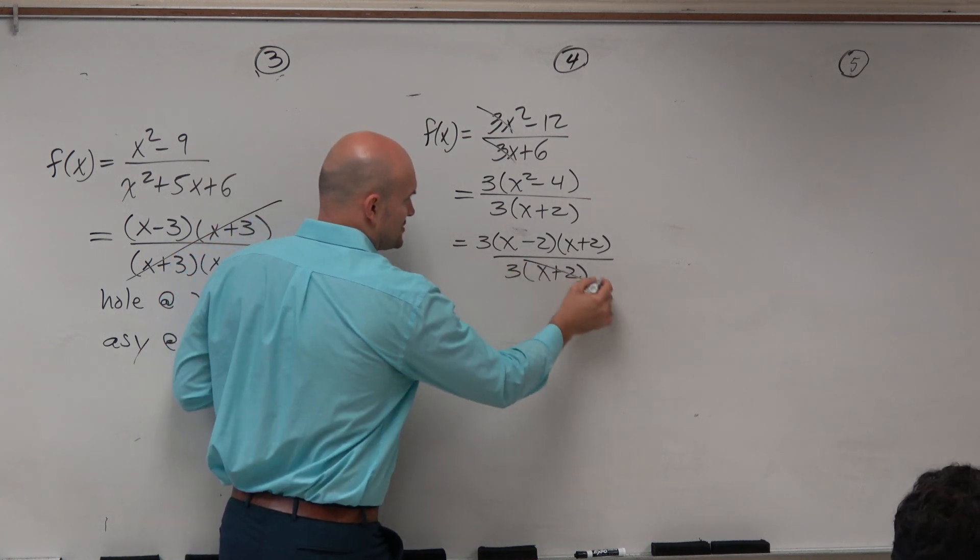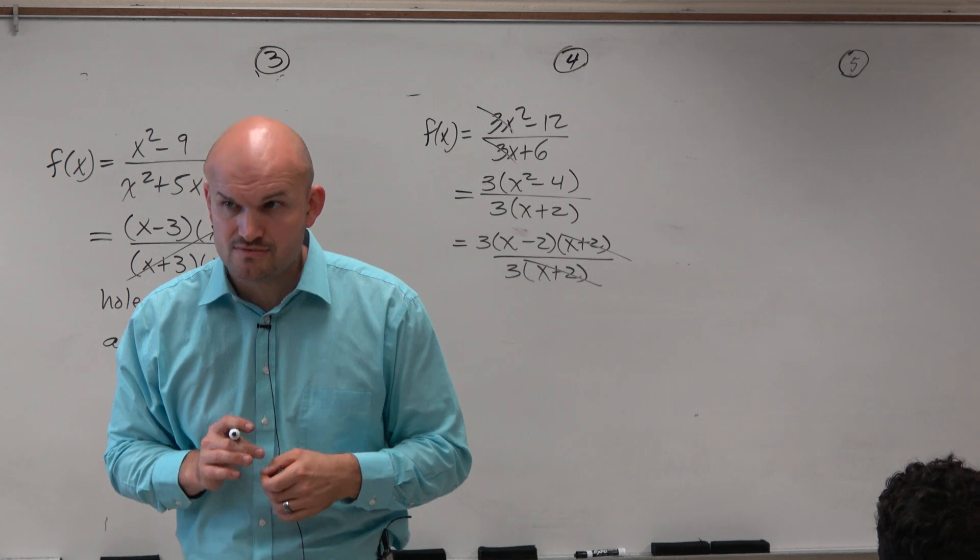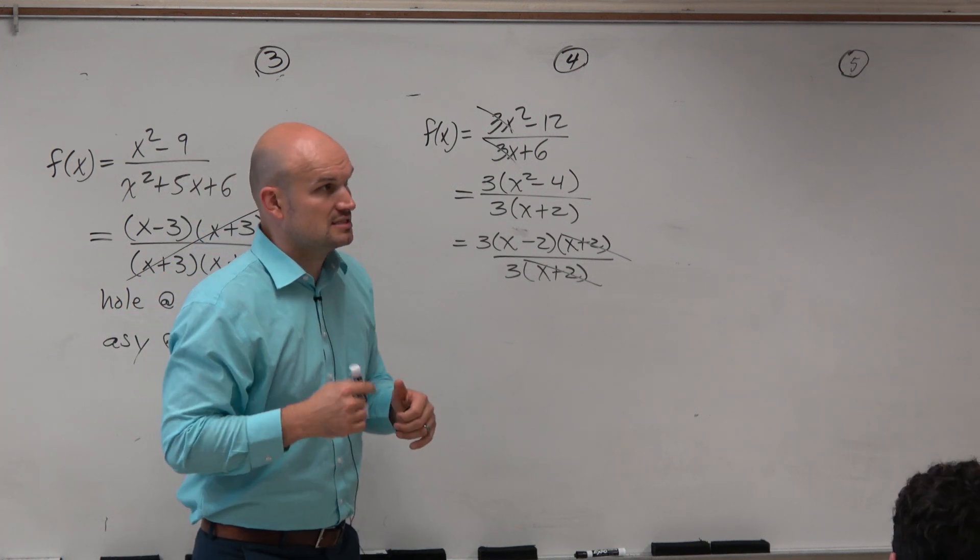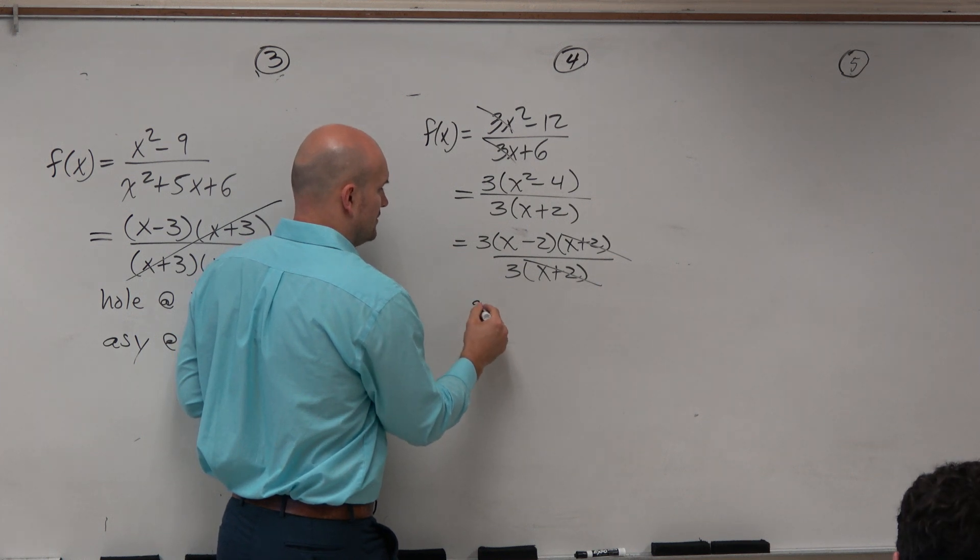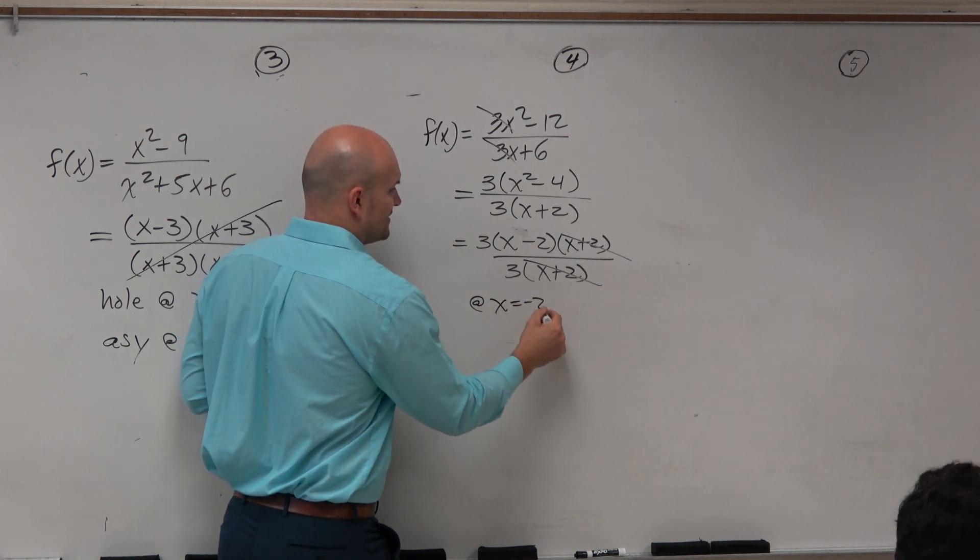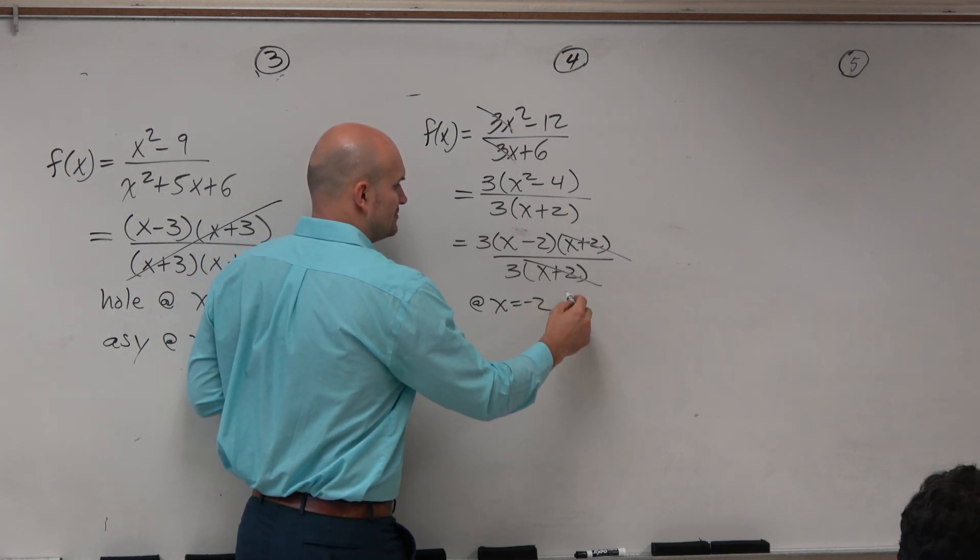Now, we recognize the x plus 2 divides out. What is the discontinuity associated with the x plus 2? X? Oh, probably negative 2. Yeah, negative 2. So at x equals negative 2, there is a removable discontinuity, also known as a hole.